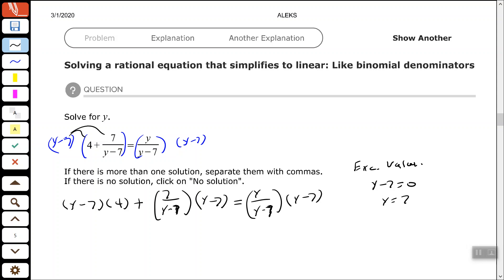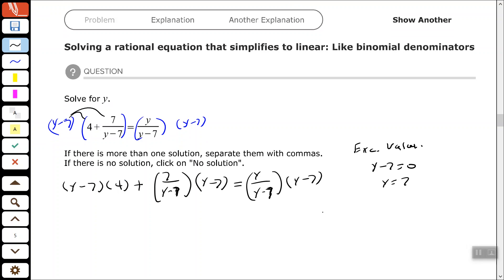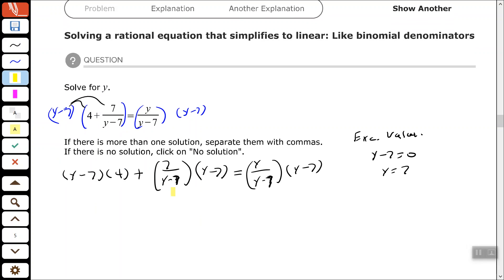All right, so let's go ahead and clear these fractions out. So here and here, I can cancel those. So that leaves me with plus 7, and then over here, that leaves me with y.